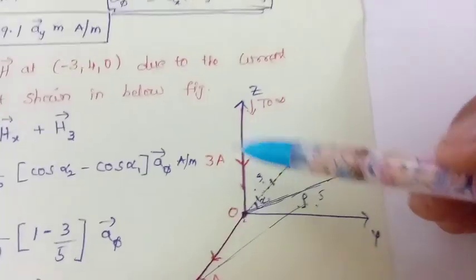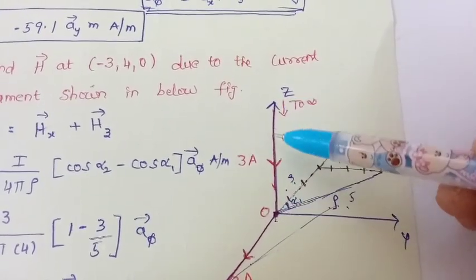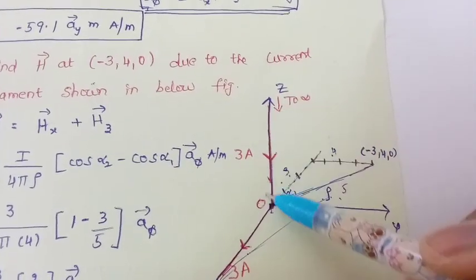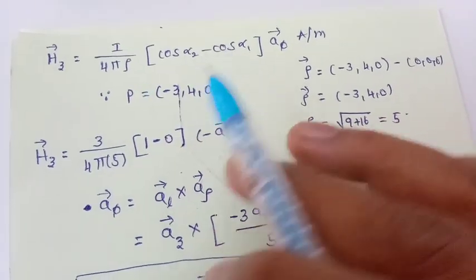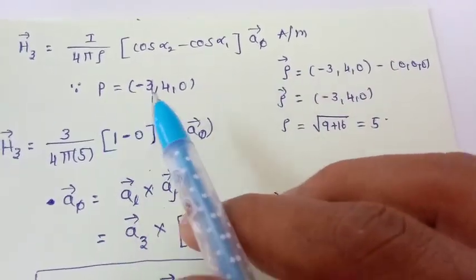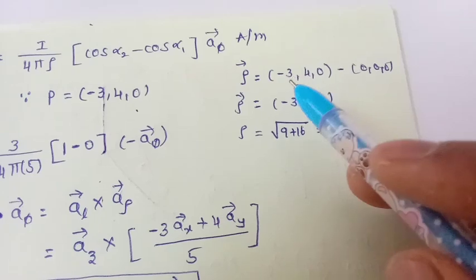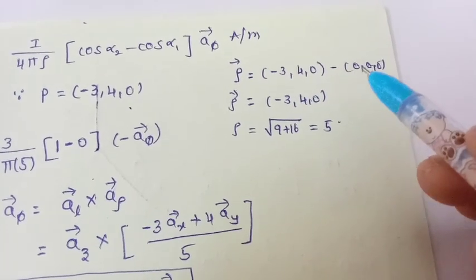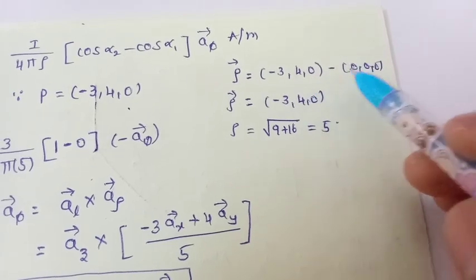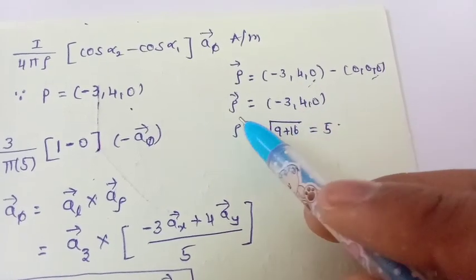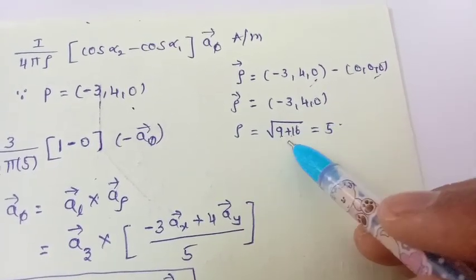Now finding H due to the z-direction conductor. Since the current is going in the negative z direction, the formula uses minus the phi direction unit vector. The rho vector equals (−3, 4, 0) minus (0, 0, 0) equals (−3, 4, 0), and rho equals square root of (9 + 16) equals 5.